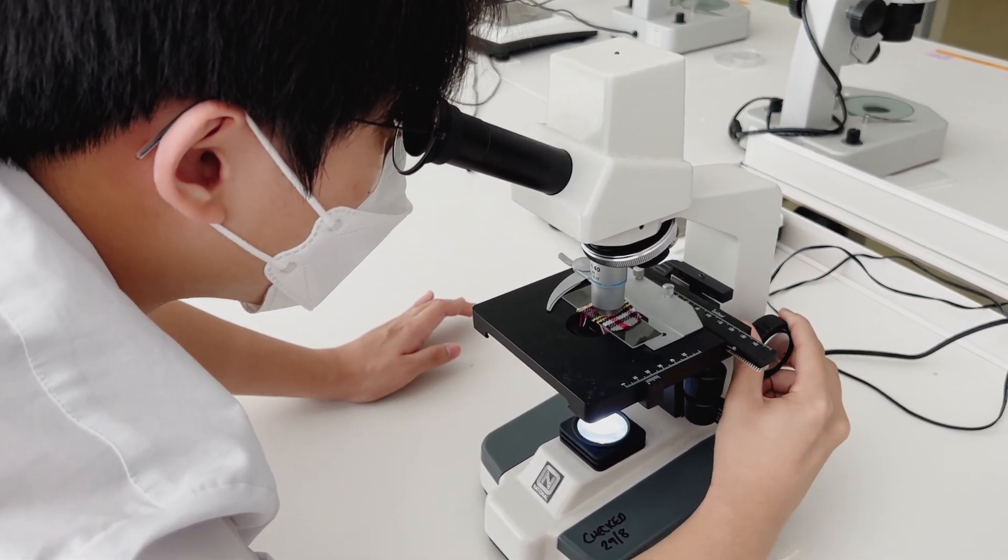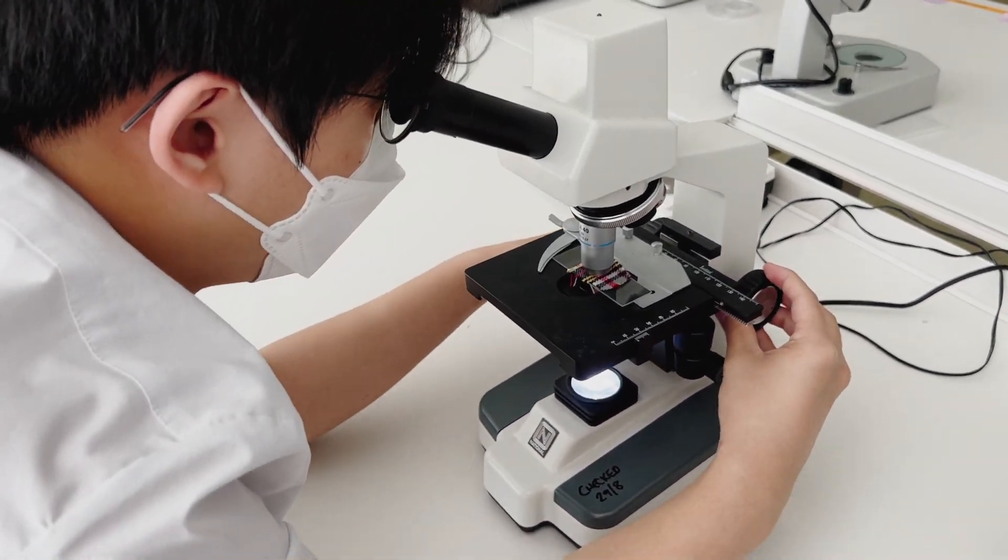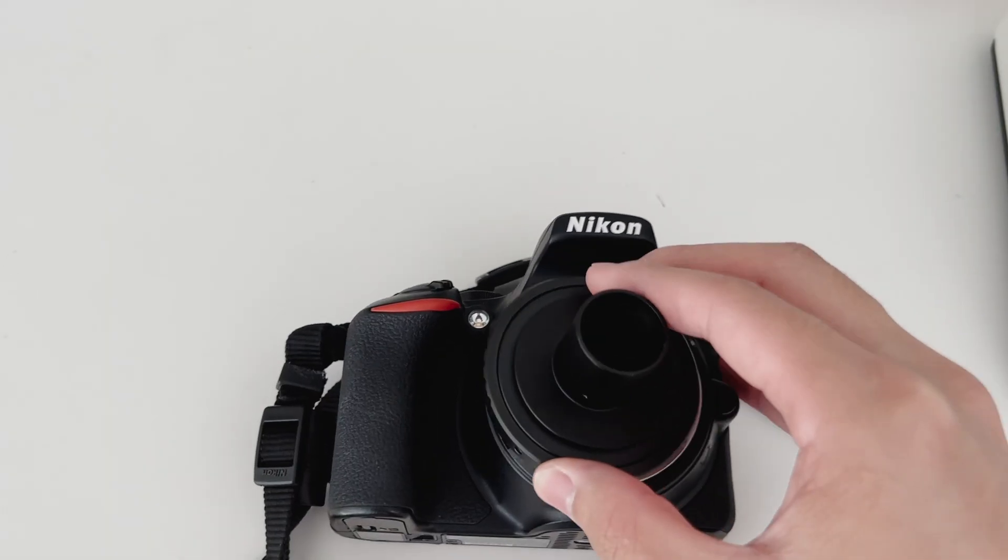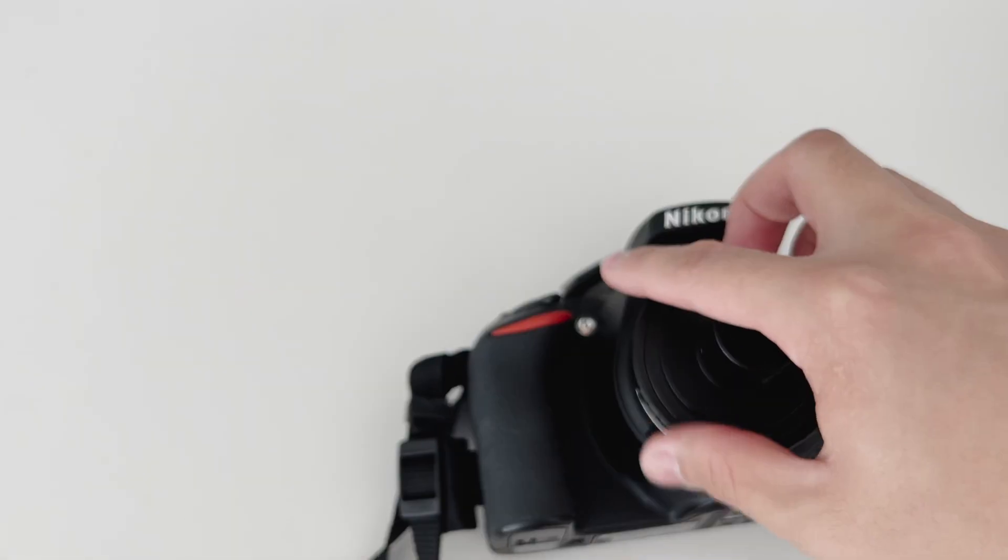Next, we move on to taking the photographs themselves. First, set up your SD card and battery. Then, lock a microscope adapter onto the camera lens.